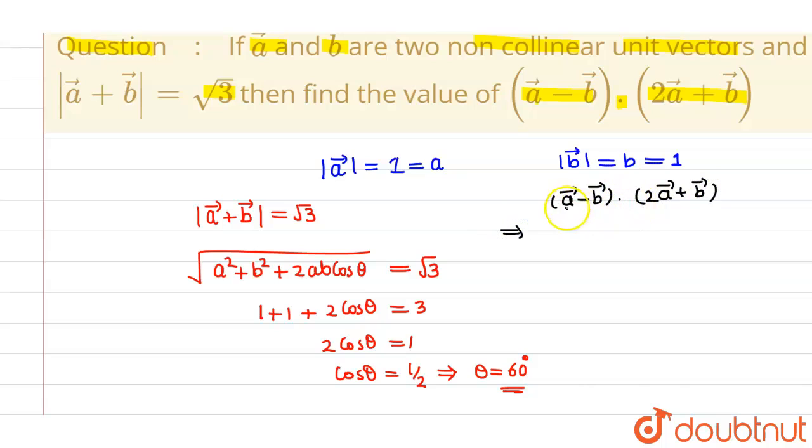If you perform the dot product, then you will be having 2A square. If I multiply this with this, then if I multiply this with this, I will be having plus A vector dot B vector. Again, this will be minus 2A vector dot B vector minus B square.